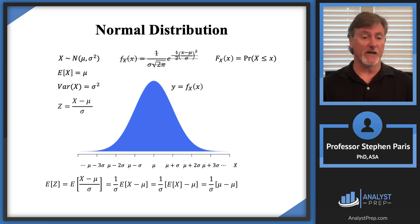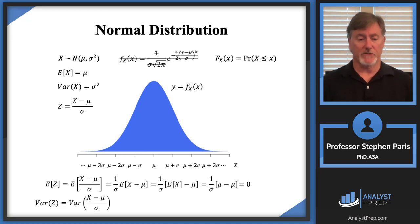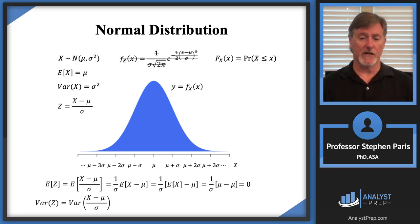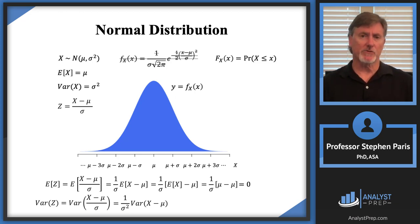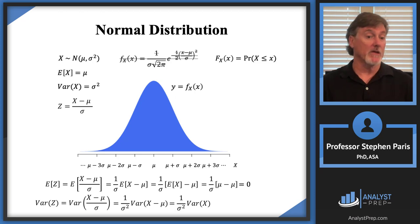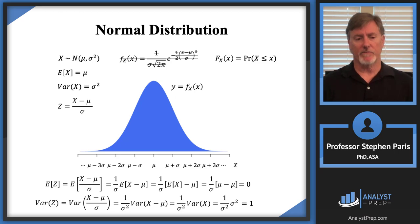When we apply this transformation, using properties of expected values, the expected value of Z is zero. Using properties of variance, the sigma in the denominator comes out as sigma squared — think of that as one over sigma squared — and subtracting mu contributes nothing to the variance calculation. So the last expression is just one over sigma squared times the variance of X, which is sigma squared, giving a variance of one.